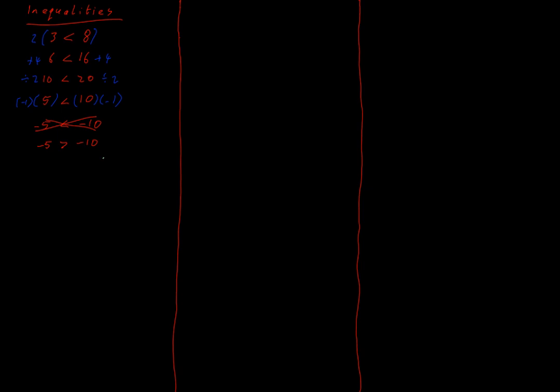So what I've got is that inequalities behave exactly like equations — I can do all of the same stuff to them, except that I can't multiply or divide by a negative number. If I do that, my greater than or less than sign is going to flip around and change its direction.